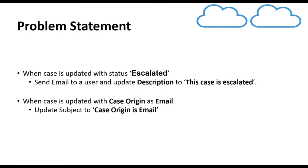So we have a problem statement. First, when a case is updated with status 'Escalated', we need to send an email to the user and update the description of that case to the string 'This case is escalated'. Next, when the case origin field is set to 'Email', we have to update the subject of the case to the string 'Case origin is email'.